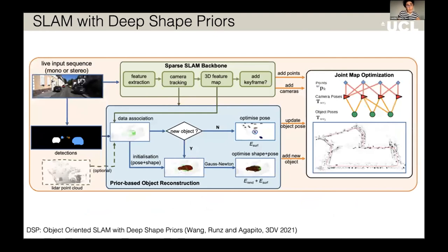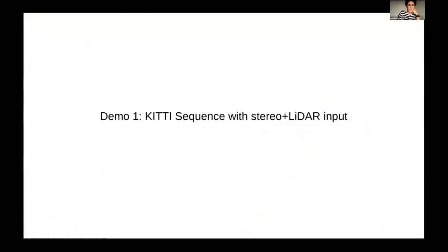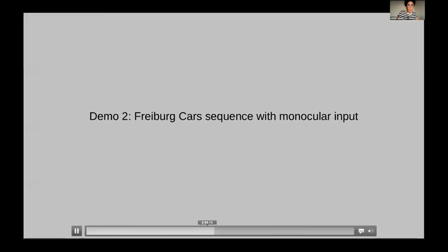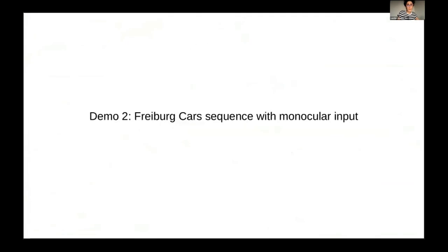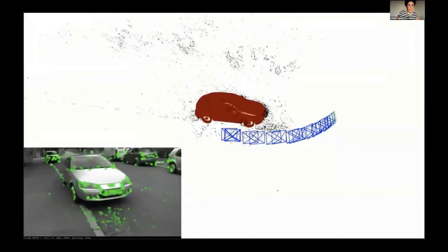We can also embed this into a SLAM system — either monocular or stereo — and reconstruct the scene as a collection of objects. On the KITTI dataset, we go along detecting objects and reconstructing them using shape priors. We end up with a really rich map that has all the objects, camera poses, and some sparse points. We can even do this from monocular input, just from an RGB sequence, and the system runs in real time.